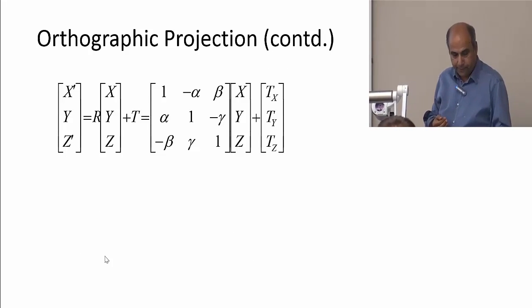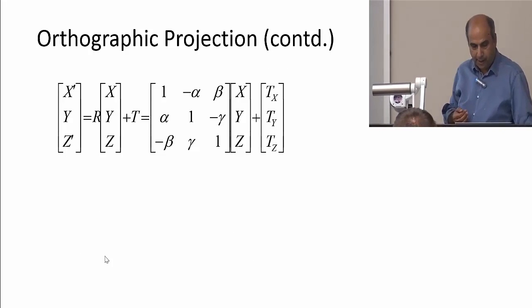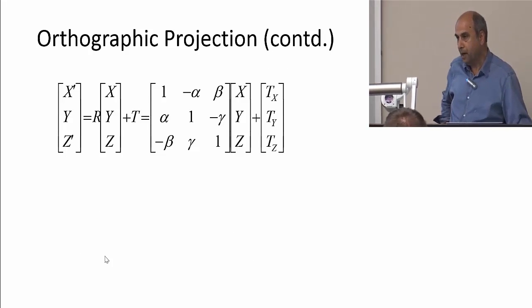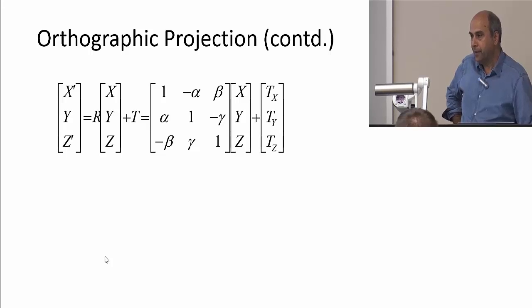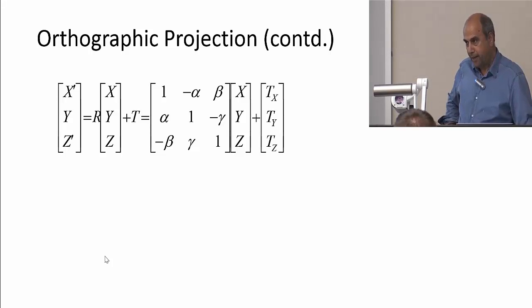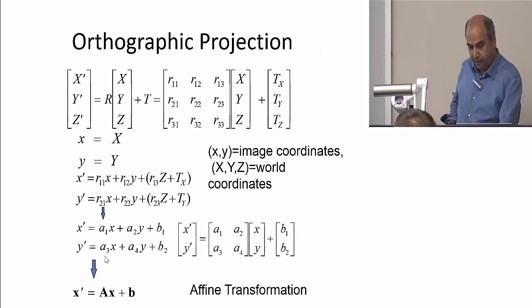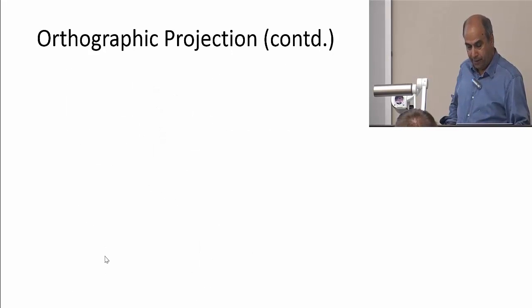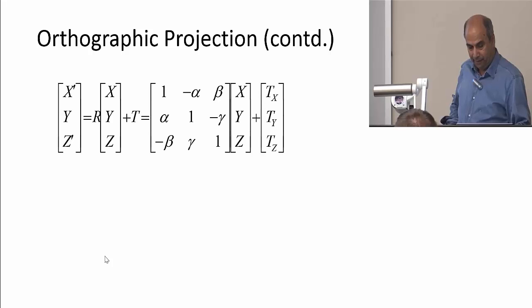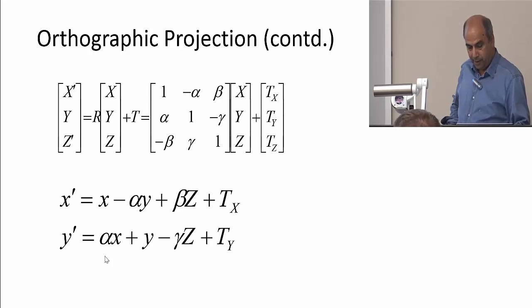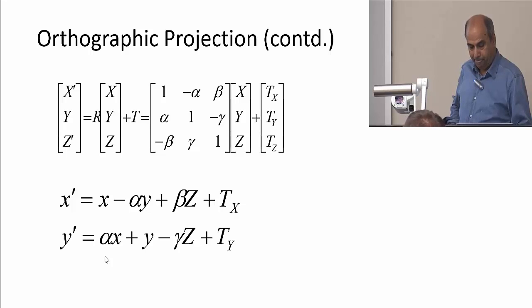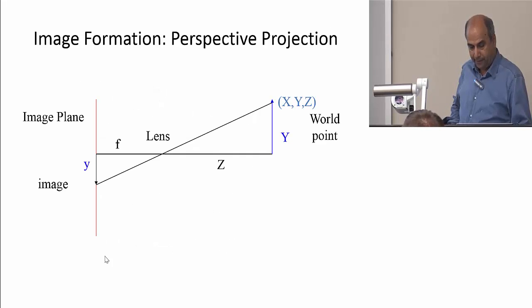Another way to derive this uses the Euler angle rotation. Earlier we used the general rotation matrix with nine unknowns; using Euler angles, the result simplifies similarly, and we get x', y' in terms of the Euler angles. Now let's look at a more interesting case.